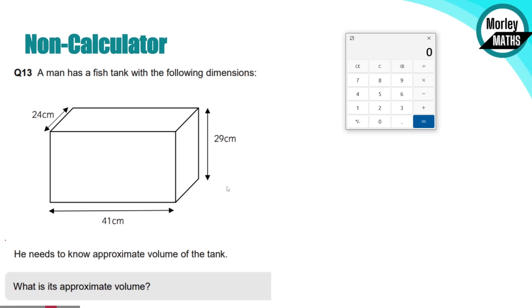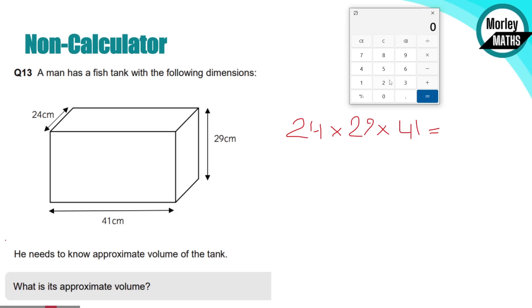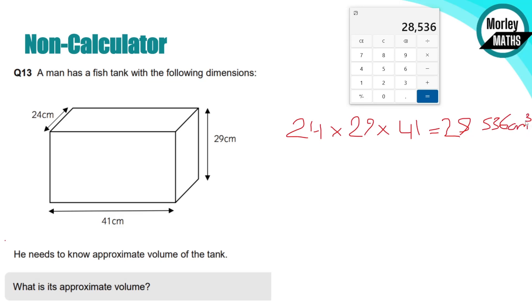Pause the video and try this question from an exam paper. A man has a fish tank with dimensions 24 centimeters, 29 and 41 - that's length, height and width. He needs to know the approximate volume of the tank. The volume is 24 times 29 times 41. It doesn't matter which order you do them in. That gives us 28,536 centimeters cubed. Always remember the centimeters cubed.